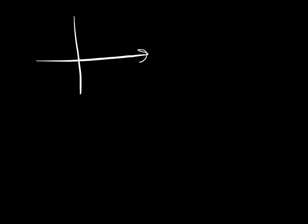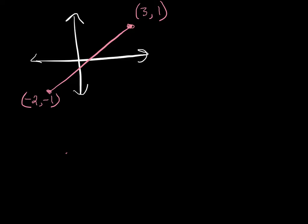Let's draw another set of axes and another line. This time I'm going to give each point a value. I'm going to label this negative 2, negative 1 and this is 3 comma 1. So for this point, my x value is negative 2 and my y value is negative 1. Over here my x value is 3 and my y value is 1. Let's label this point A and this point B. So let's try to find the slope of line AB.